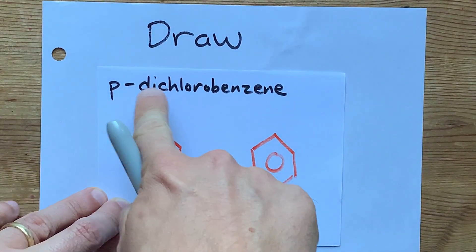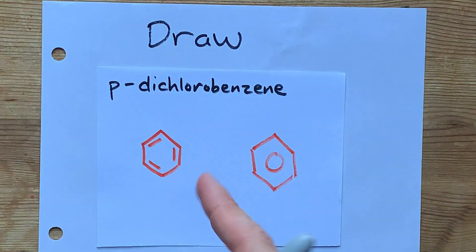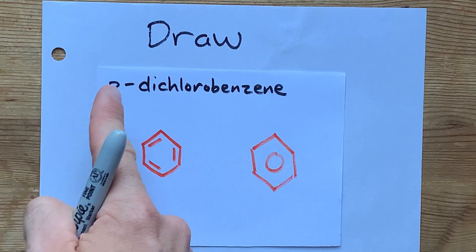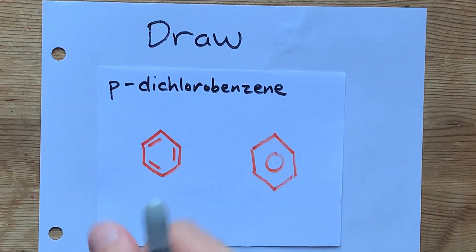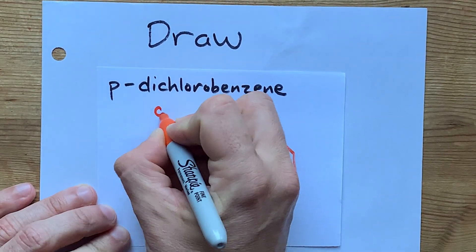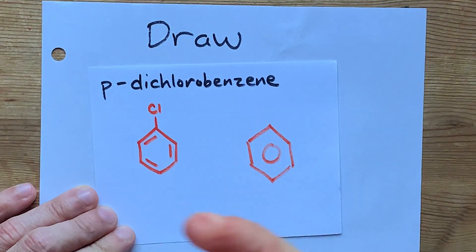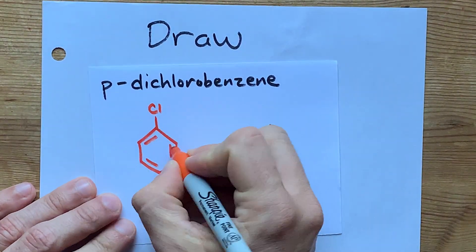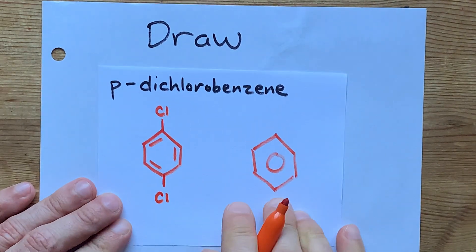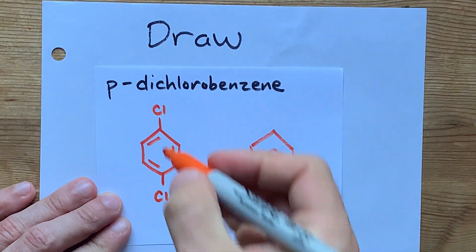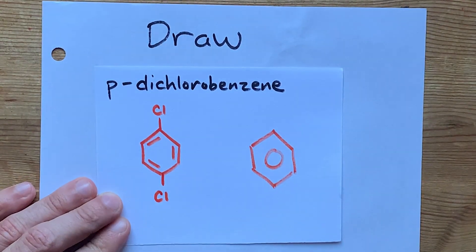The dichloro means that there are two chlorines attached to the benzene, and the P means that those two chlorines are across from each other. You can put the first one anywhere you want, and the next one is three carbons over — so you go one, two, three, and put the other chlorine there. I call that across from each other because they're in a vertical line with each other.